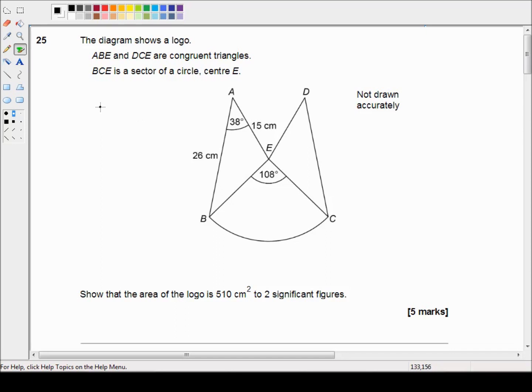Question 25 reads: The diagram shows a logo. ABC and DCE are congruent triangles. BCE is a sector of a circle, center E. Show that the area of the logo is 510 centimeters squared to two significant figures.